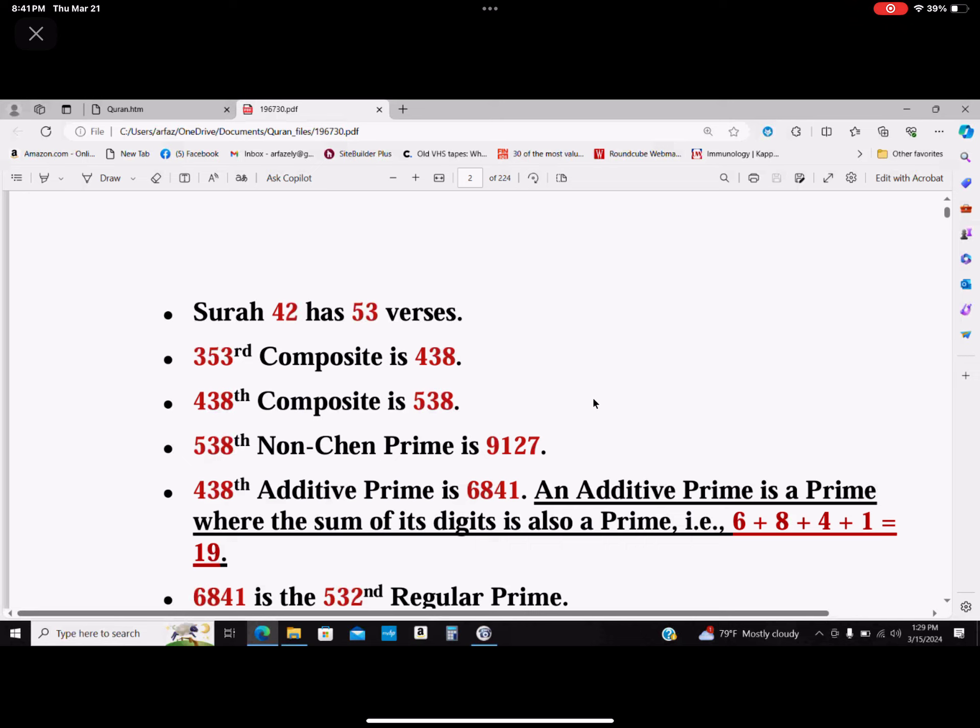The 538th non-Chen prime is 9127. So immediately we go from ha-meem in chapter 42, the 19th Gaussian Mersenne prime exponent, and then we get to 9127. The 438th additive prime is 6841. An additive prime is a prime where the sum of the digits is also a prime, i.e., 6 plus 8 plus 4 plus 1 equals 19.